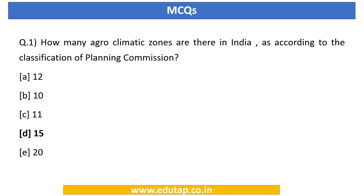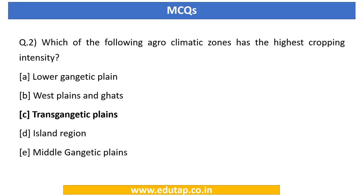Having covered 7 agro-climatic zones, we can now answer both MCQs. The answer to the first question — how many agro-climatic zones are there in India — is 15, as classified by the Planning Commission of India. The answer to the second question — the zone with the highest cropping intensity — is the Trans-Gangetic Plain, covering Haryana, Punjab, parts of Rajasthan, Delhi and Chandigarh.